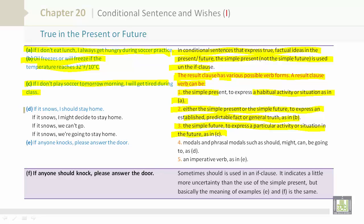Now, let's take a look at D: If it snows, I should stay home. Other ways to say that: If it snows, I might decide to stay home. If it snows, we can't go. If it snows, we're going to stay home. 4. Modals and phrasal modals, such as should, might, can, be going to, as in D.